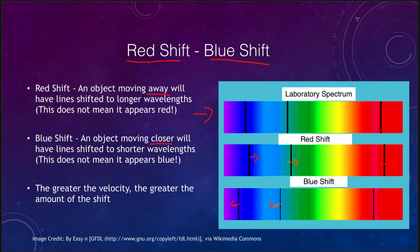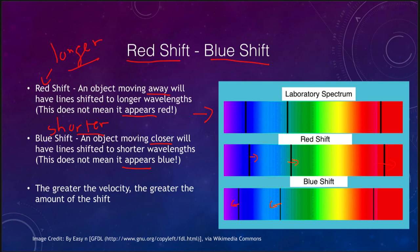When we talk about a red shift or a blue shift, it does not mean that the object appears that color. It only means the lines are shifted towards longer wavelengths for a red shift, or shorter wavelengths for a blue shift. A red shift means the object is moving away, and a blue shift means it's moving towards you. The amount of the shift tells you how great the velocity is — a very small shift means a small velocity, and a very large shift means a very large velocity. The greater the shift, the greater the velocity.